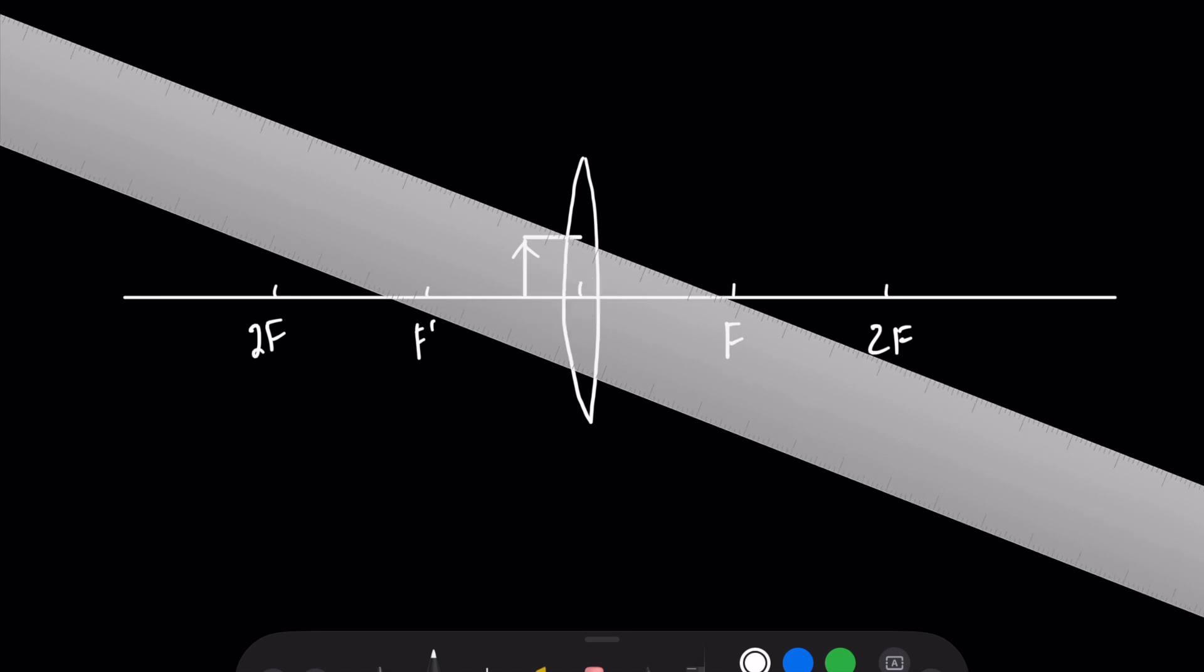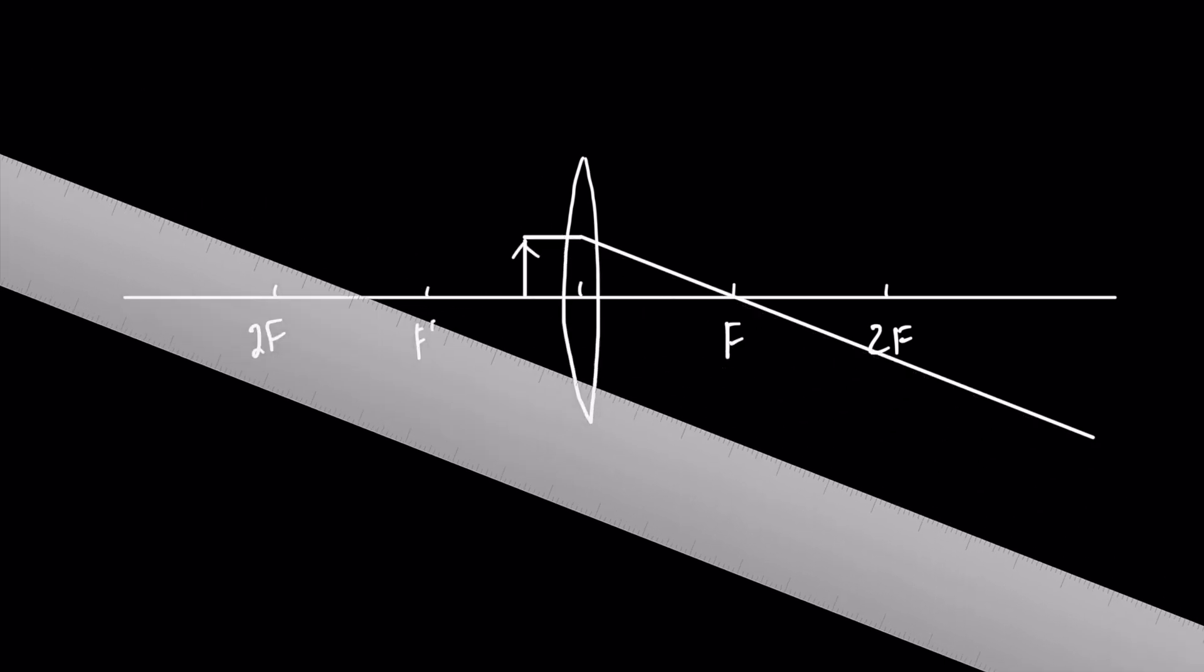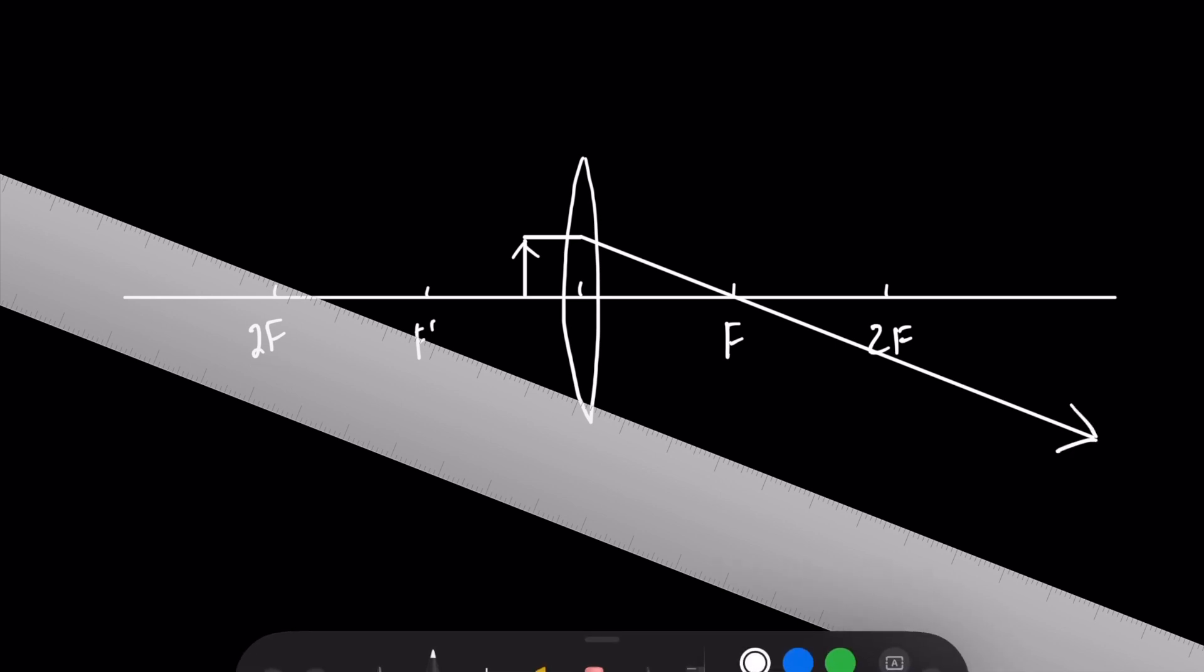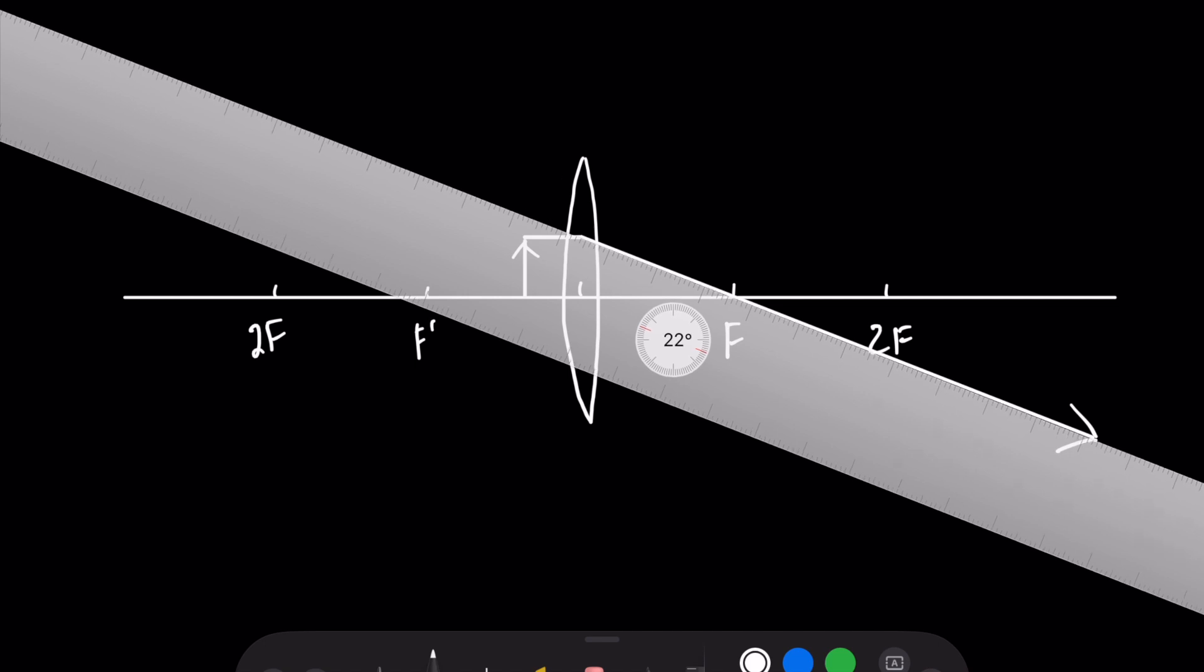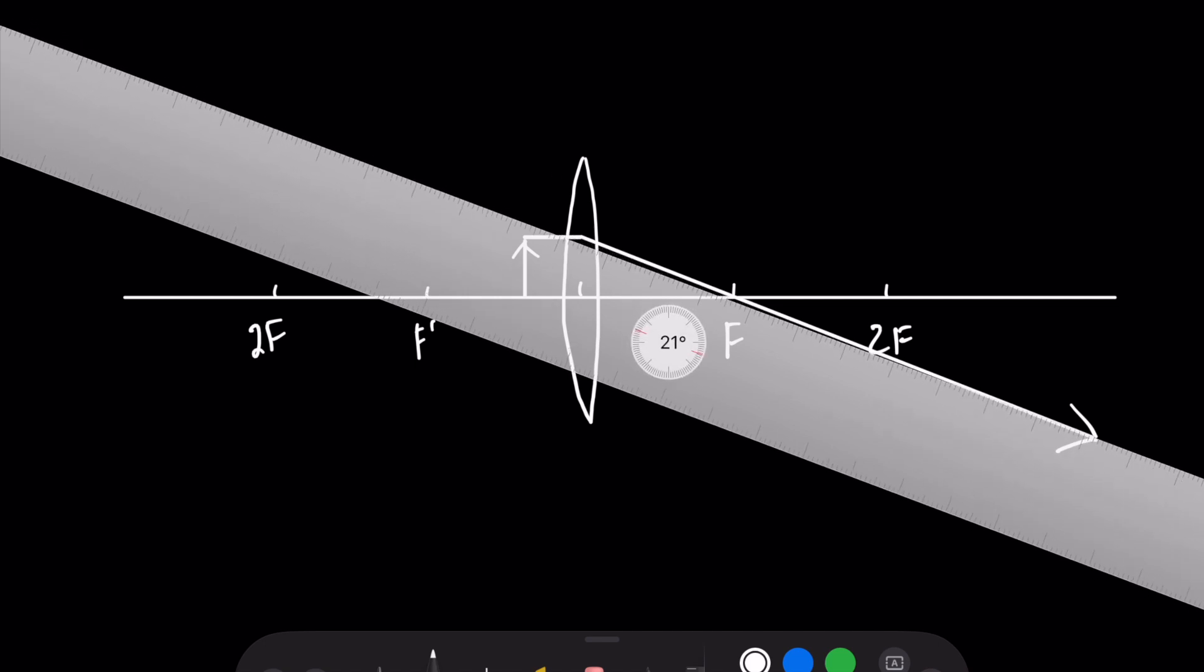it's going to refract right through our primary focal point. So remember, our primary focal point is always on the opposite side of the object for a converging lens. So that looks really good right there. But this is where things differ just a little bit here, folks.